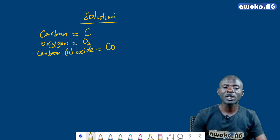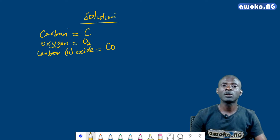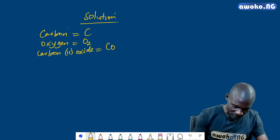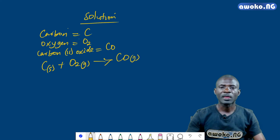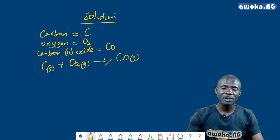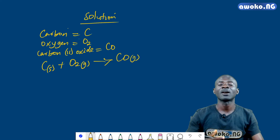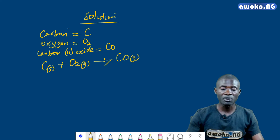So in writing the chemical equation, we have C (solid) plus O2 (gas) to produce CO (gas). Taking a look at my left-hand side, I have one atom of carbon; my right-hand side also has one atom of carbon. So the number of carbon atoms in the equation is balanced.